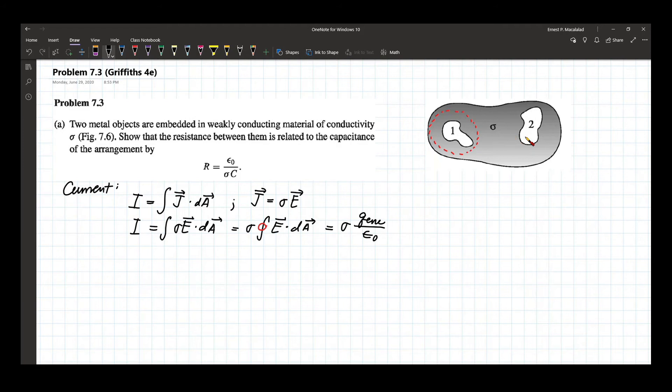By definition, capacitor has two conducting objects that have the same magnitude of charge, but opposite in sign. So the current is now equal to sigma Q over epsilon naught. Whatever the Q is, that is related to your capacitor.